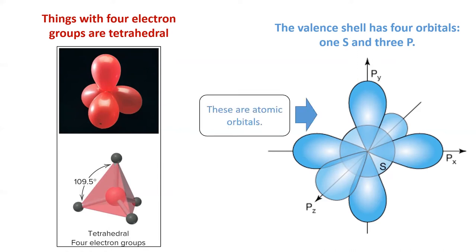Well, the orbitals we learned about in chapter 6 are atomic orbitals. Atomic orbitals only exist when the atom is all on its own. The orbitals which form molecules are hybrid orbitals.